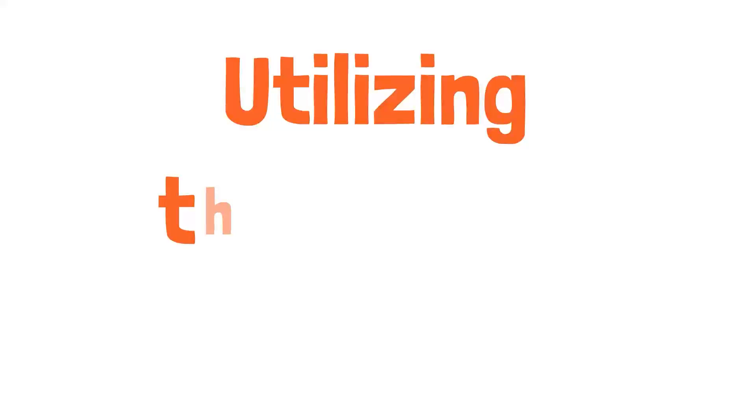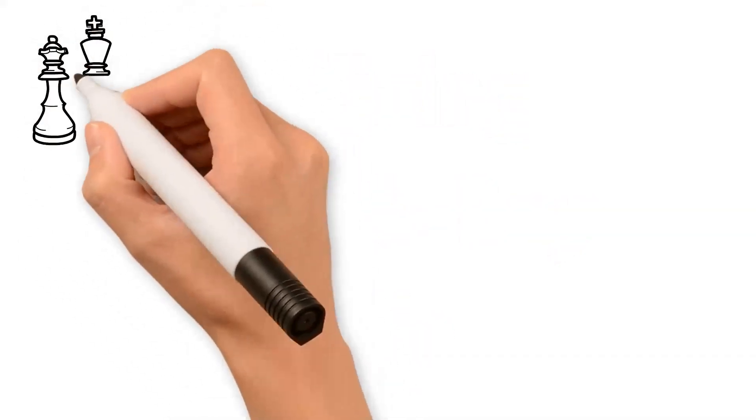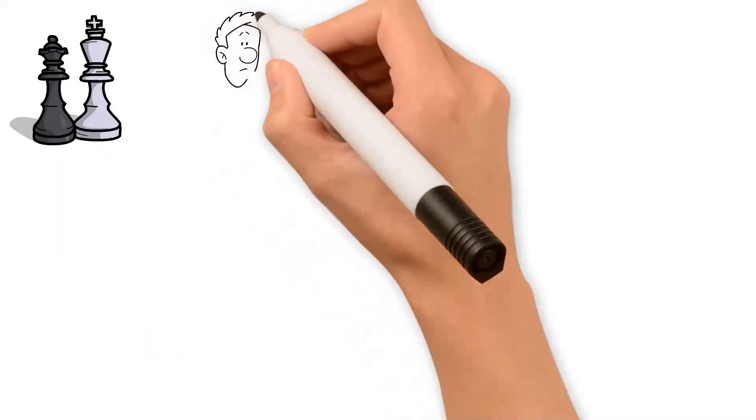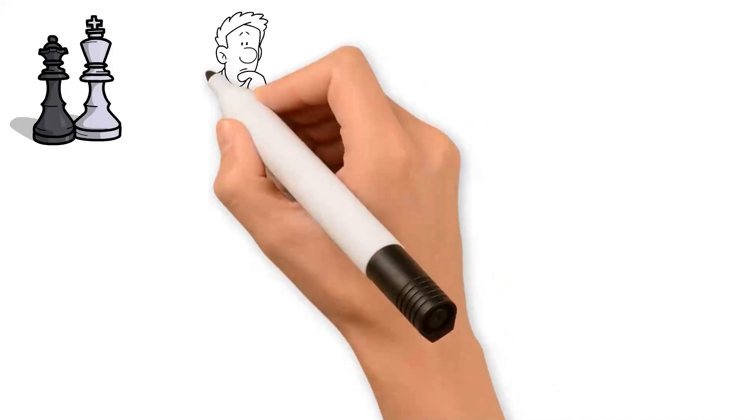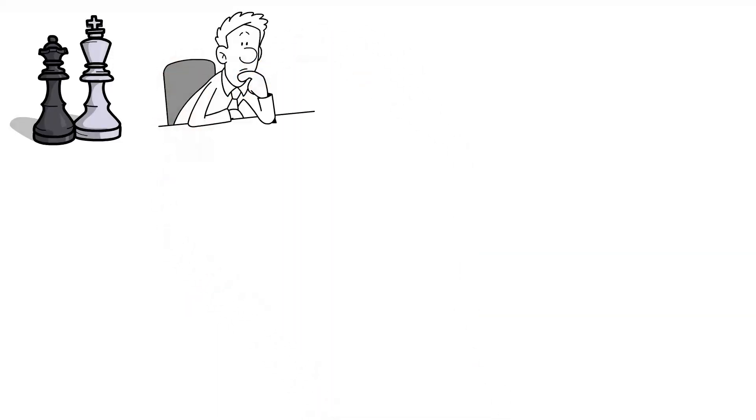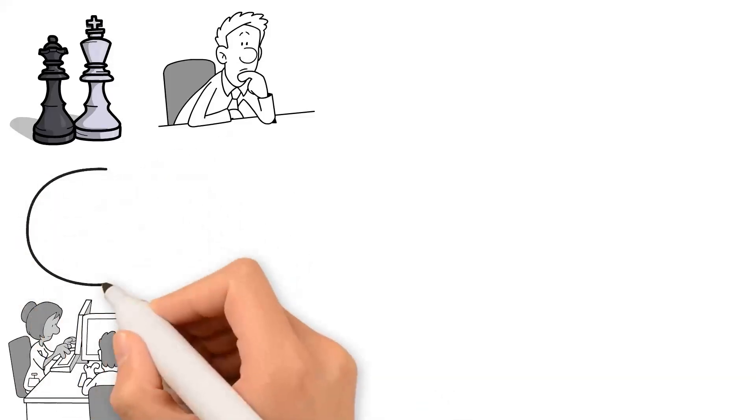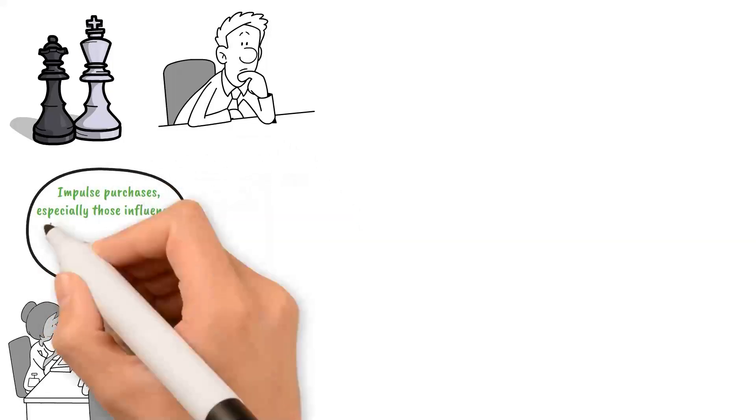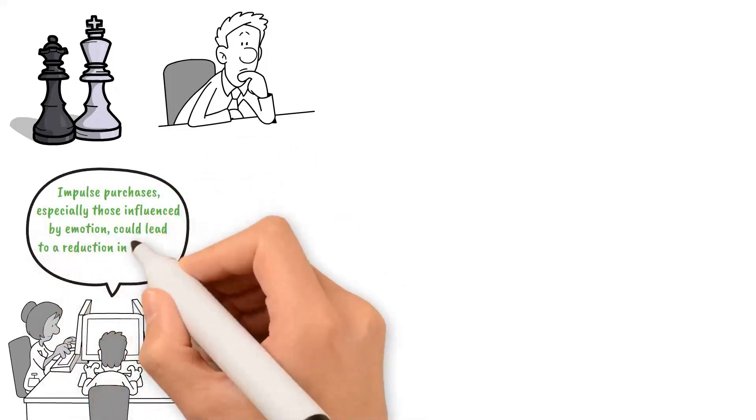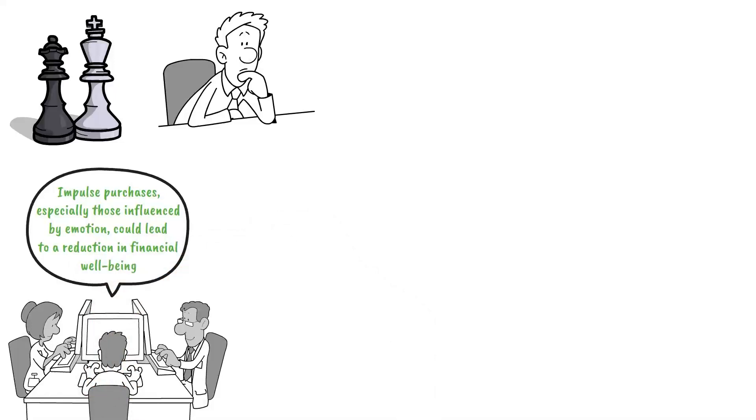Utilizing the 30-day rule. The 30-day rule is a financial and minimalist strategy that urges individuals to delay non-essential purchases for 30 days. This habit can help curb impulse buying, allowing you to evaluate whether the item is truly necessary or merely a desire. In 2023, a study from the American Psychological Association found that impulse purchases, especially those influenced by emotion, could lead to a reduction in financial well-being. Therefore, practicing the 30-day rule could potentially safeguard against these financial pitfalls.